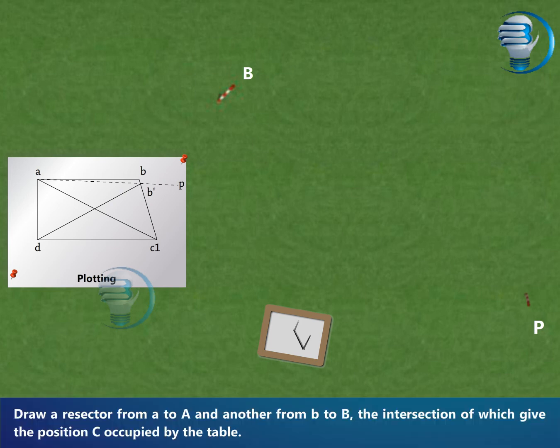Draw a resector from a to A and another from b to B, the intersection of which gives the position C occupied by the table.